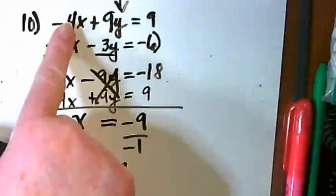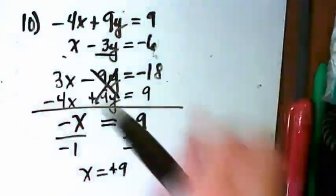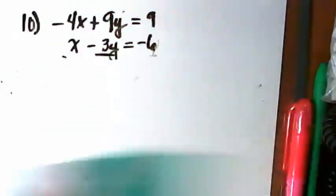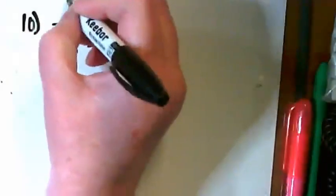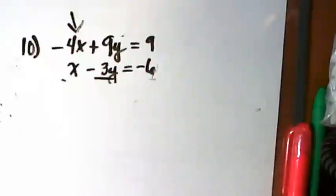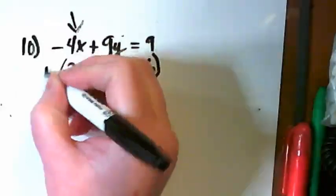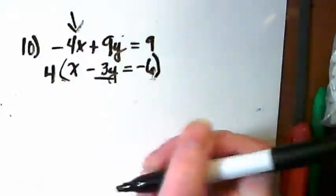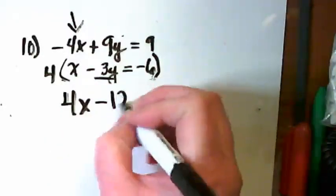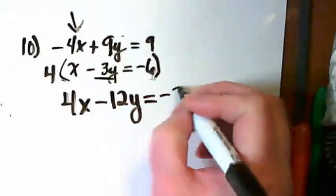Let me go back to this initial equation. And what if instead of changing the y term to eliminate, I was looking at eliminating the x term instead. If I was going to do that as my first move, I could multiply the second equation by 4. And I would get 4x minus 12y equals negative 24.